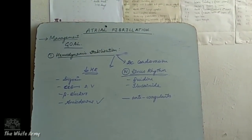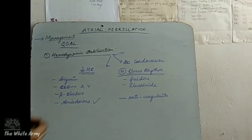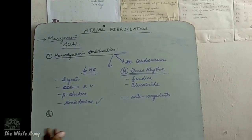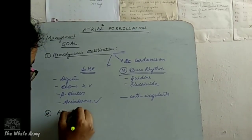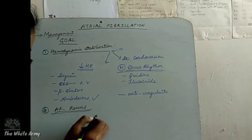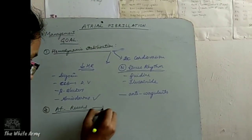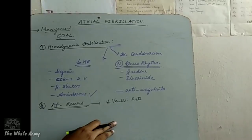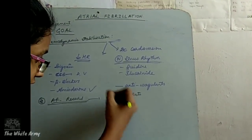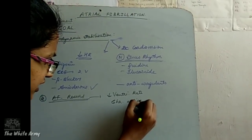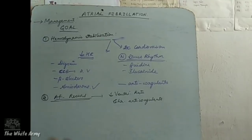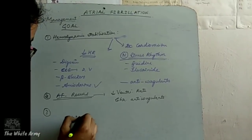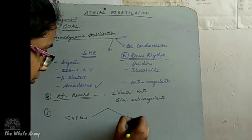These anticoagulants are given mainly to reduce recurrence in the future. If AF recurs, the management involves first reducing the ventricular rate, and anticoagulants should be given chronically to prevent further complications. Management also depends on the timing of presentation — whether within 48 hours or more than 48 hours.